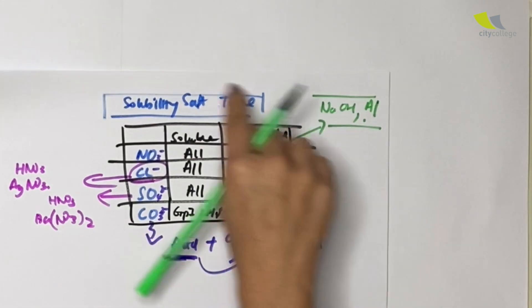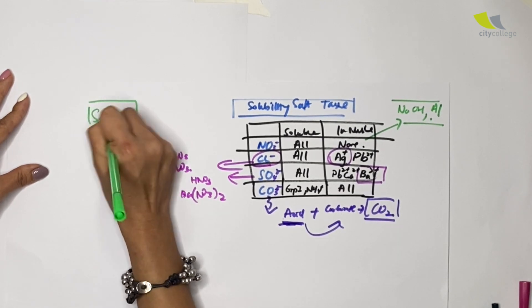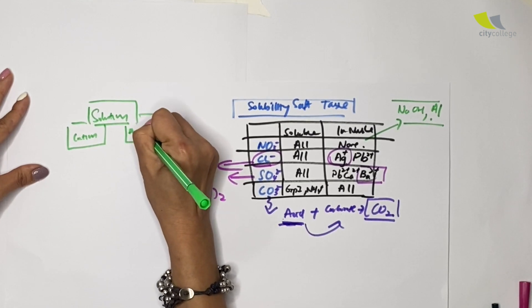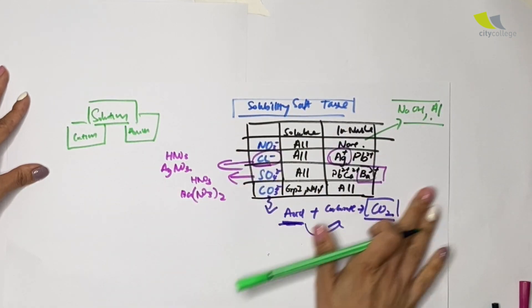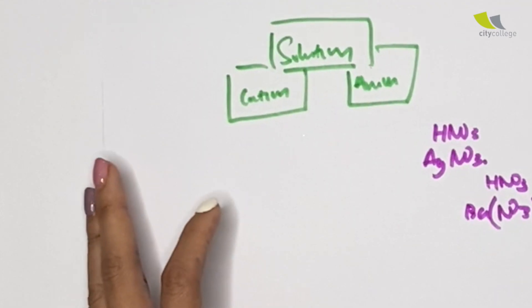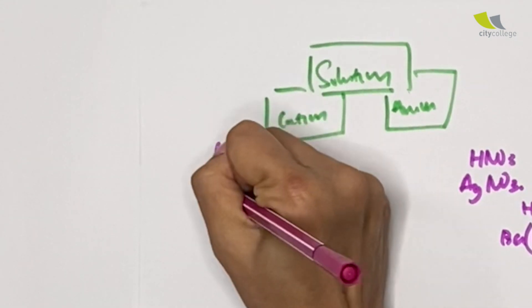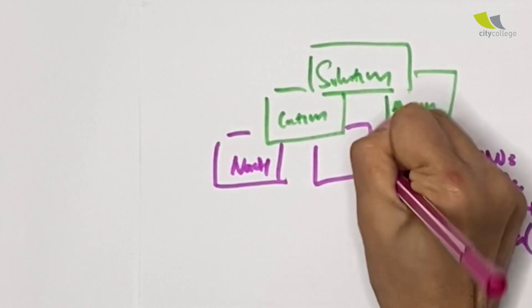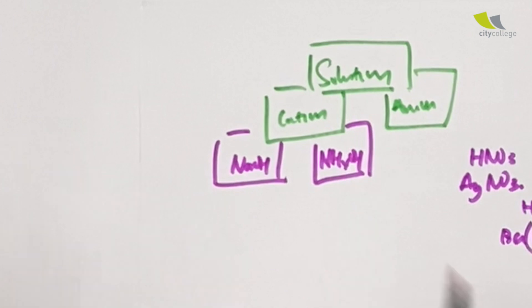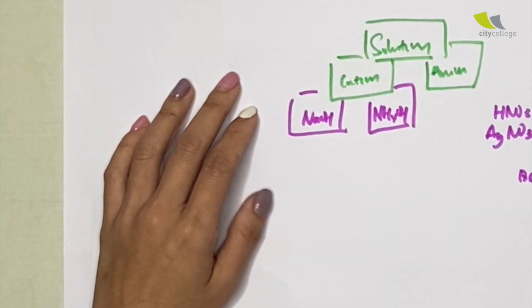So remember the sound and remember these two solutions or these two things that you add. Next up, of course I have covered the anion parts. Remember when we talk about the solution we have both the cation and the anion. So the anion part we have covered, let's go to the cation. The cation is the simplest. Why do I say so? Because you only use two solutions, which are sodium hydroxide and aqueous ammonia.